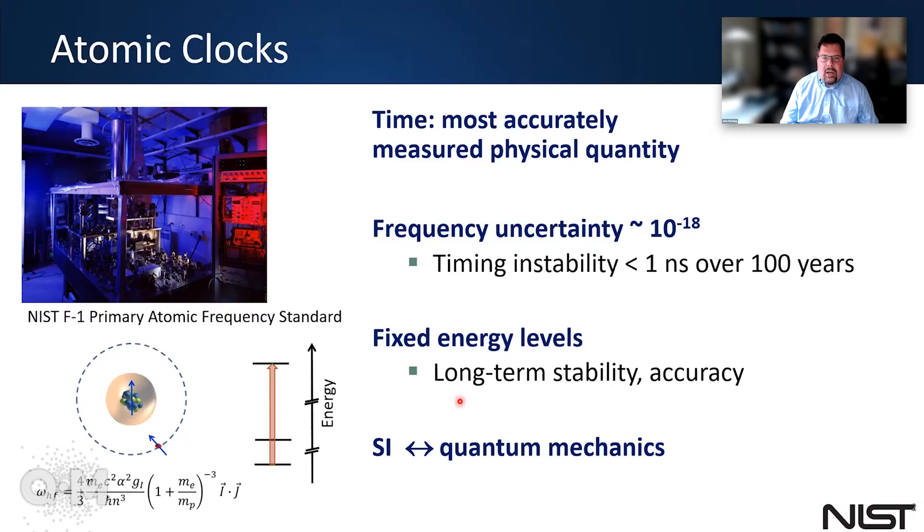The basis of these clocks is the idea that because of quantum mechanics, there are fixed energy levels in atomic systems. And so an atom is a very simple atomic system. It has a nucleus and, at least for alkali atoms, a single valence electron. And the energy level structure is all determined by fundamental constants of nature. And so that's why every atom, if it's isolated well enough, is basically the same.